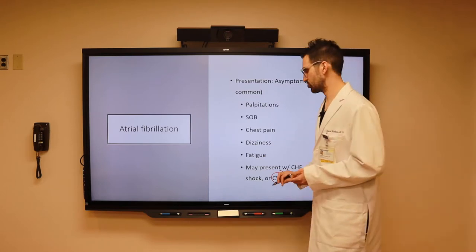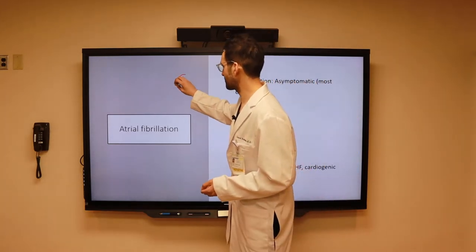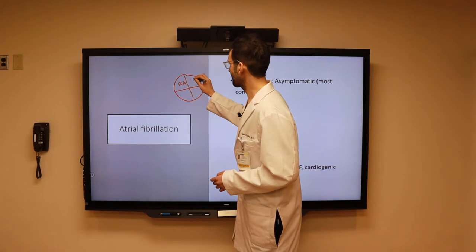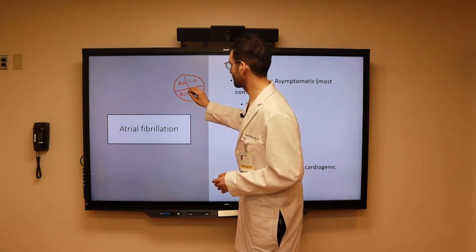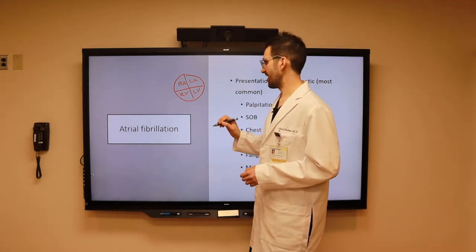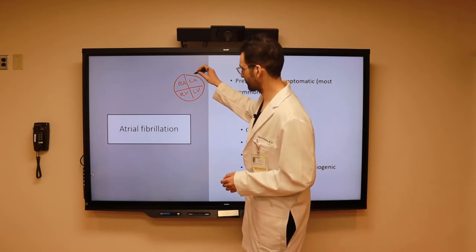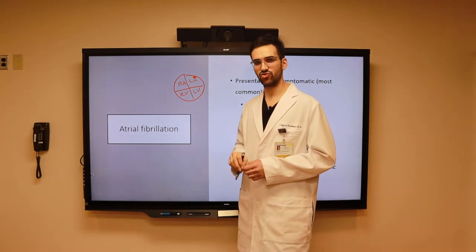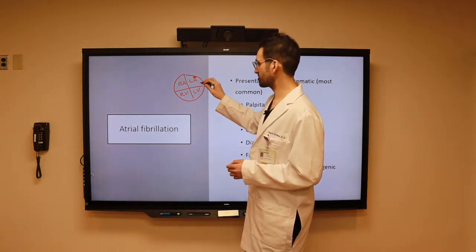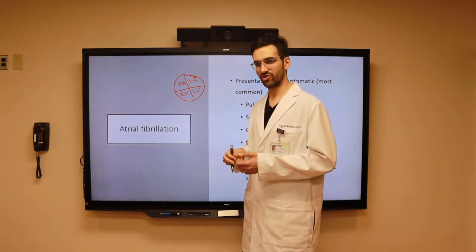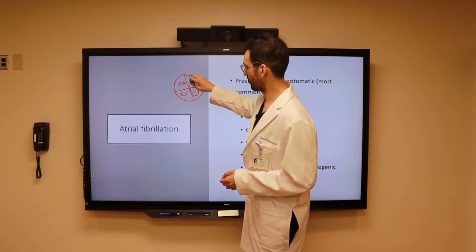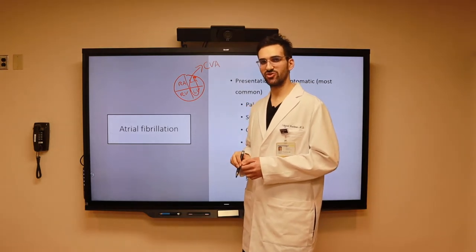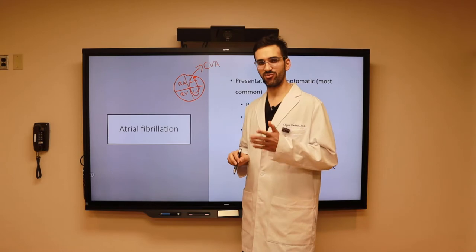This should make sense in the context of atrial fibrillation. Drawing a simple schematic of the heart with four quadrants — right atrium, left atrium, right ventricle, and left ventricle — in atrial fibrillation, as we have this irregular rhythm, we are going to have a stasis of flow, especially up in the left atrial appendage. Over time, this can form a clot in the left atrium. That clot can be dislodged, travel through the left ventricle, through the aorta, and up to the brain, leading to a stroke or CVA. This is one of the reasons why we may choose to anticoagulate our patients.